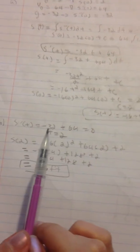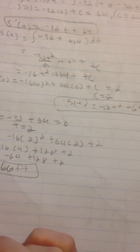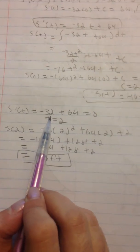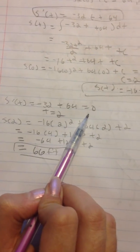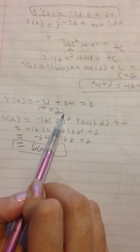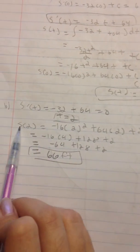Now part B asks how high will the ball go. S prime of T equals negative 32T plus 64. We set that equal to 0 and our answer is T equals 2.